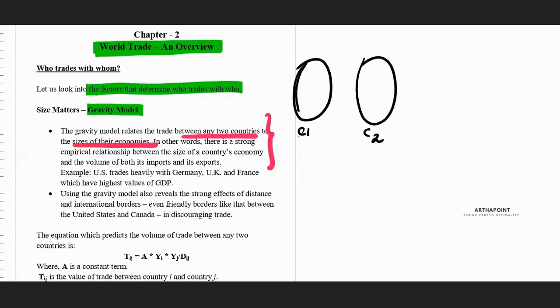Actually, this model is based on empirical relationship and says that there are two things which we have to consider. One, we have to consider how strong is the economy of the country, which is given by the GDP of the country. And secondly, what is the distance between two countries?